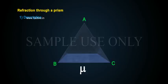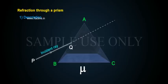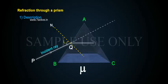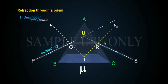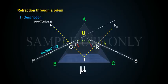Let PQ be the incident ray. Let I1 be the angle of incidence. Let I2 be the angle of emergence. Let R1 be the angle of refraction at the first surface, and R2 be the angle of refraction at the second surface.